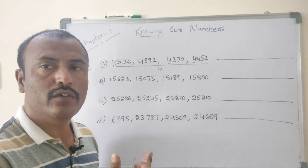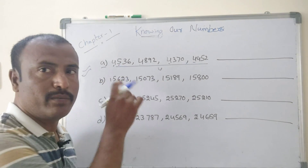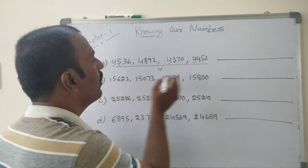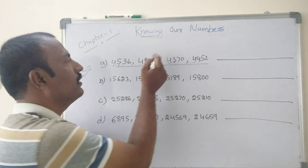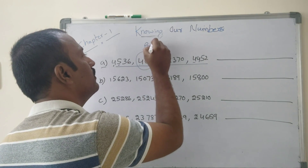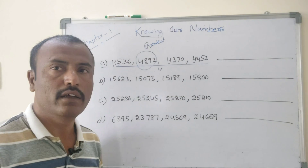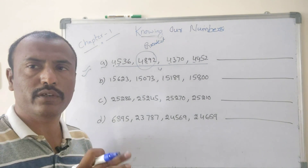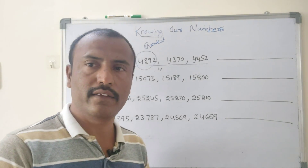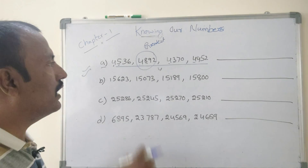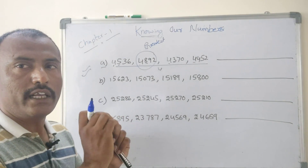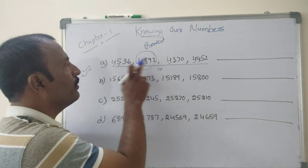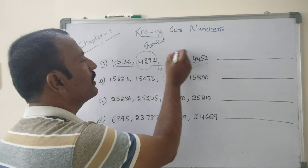At the 100th place: 5, 8, 3, 4. Obviously 8 is the greatest value, so that number is the greatest. Comparing for the smallest at the 100th place: 5, 3, 4 — automatically, the one with 3 at the 100th place is the smallest.